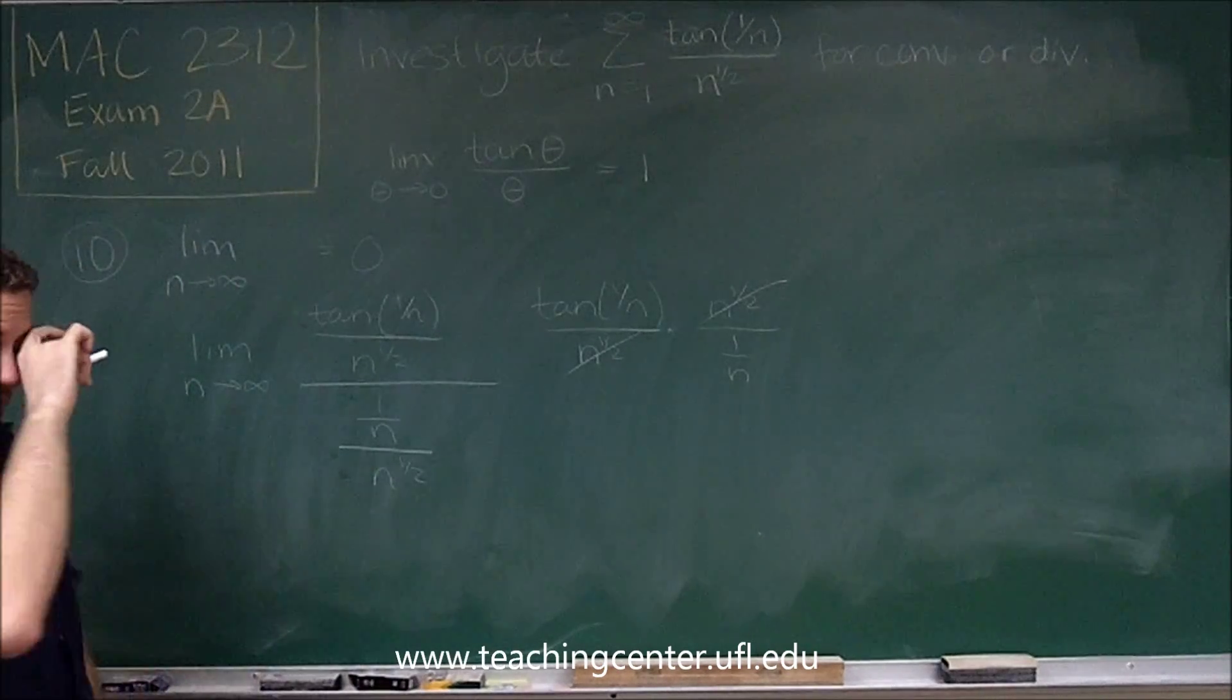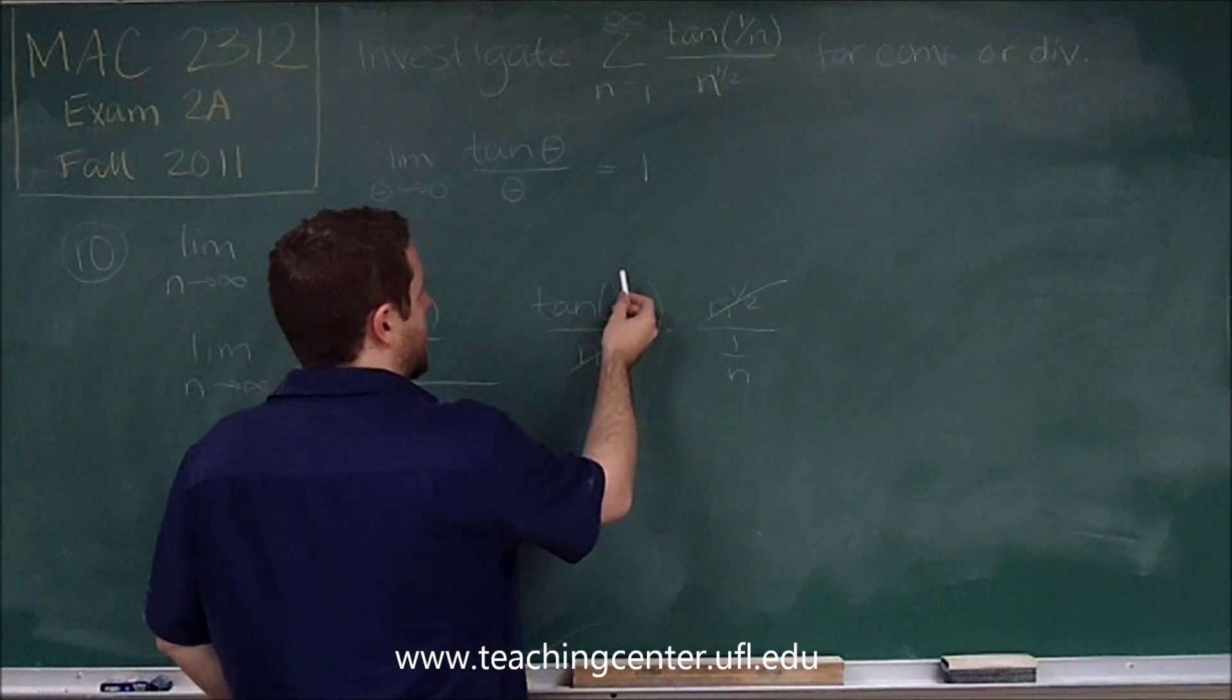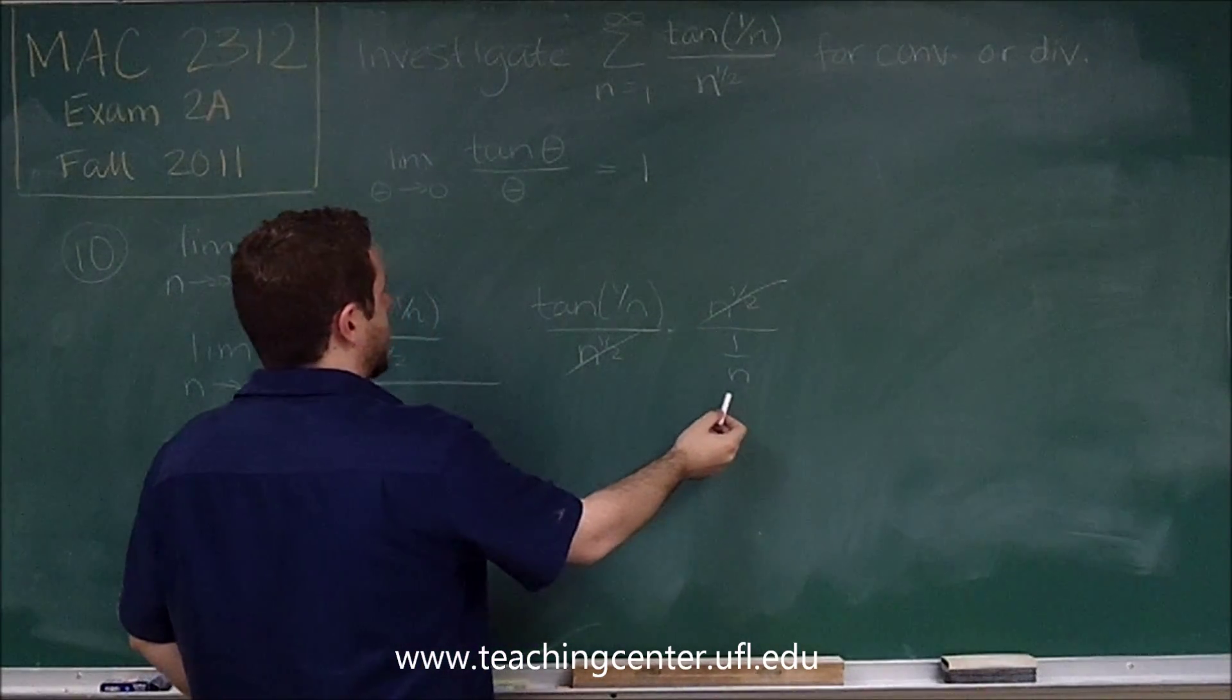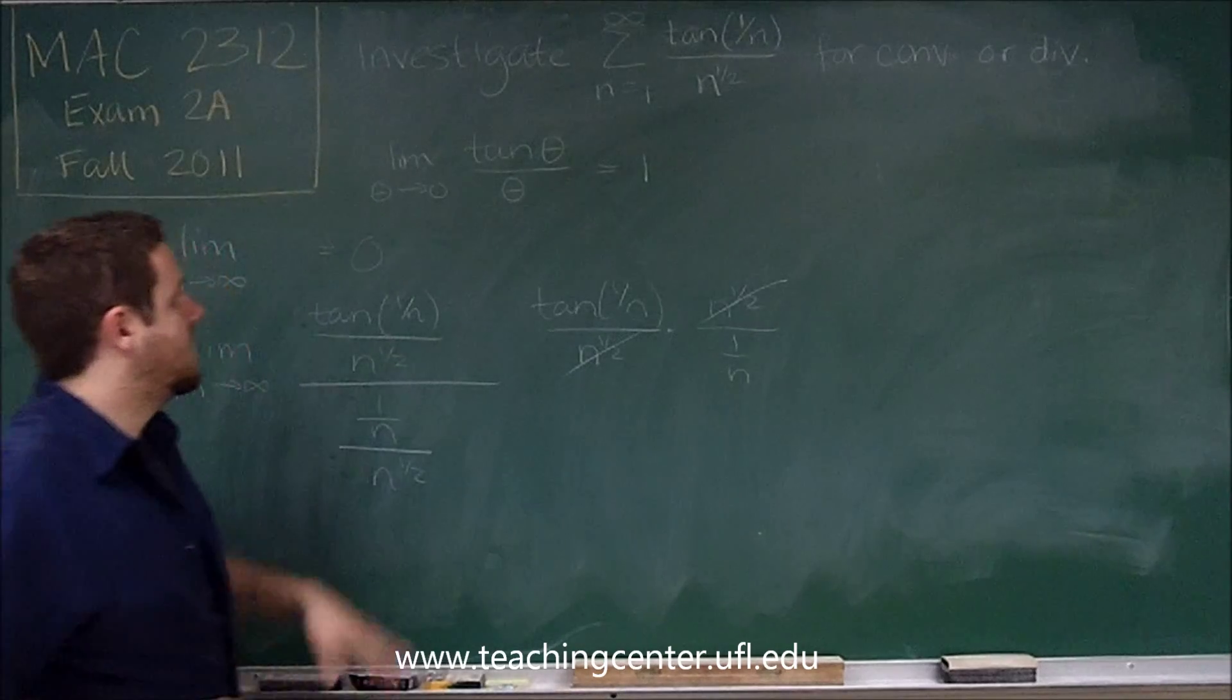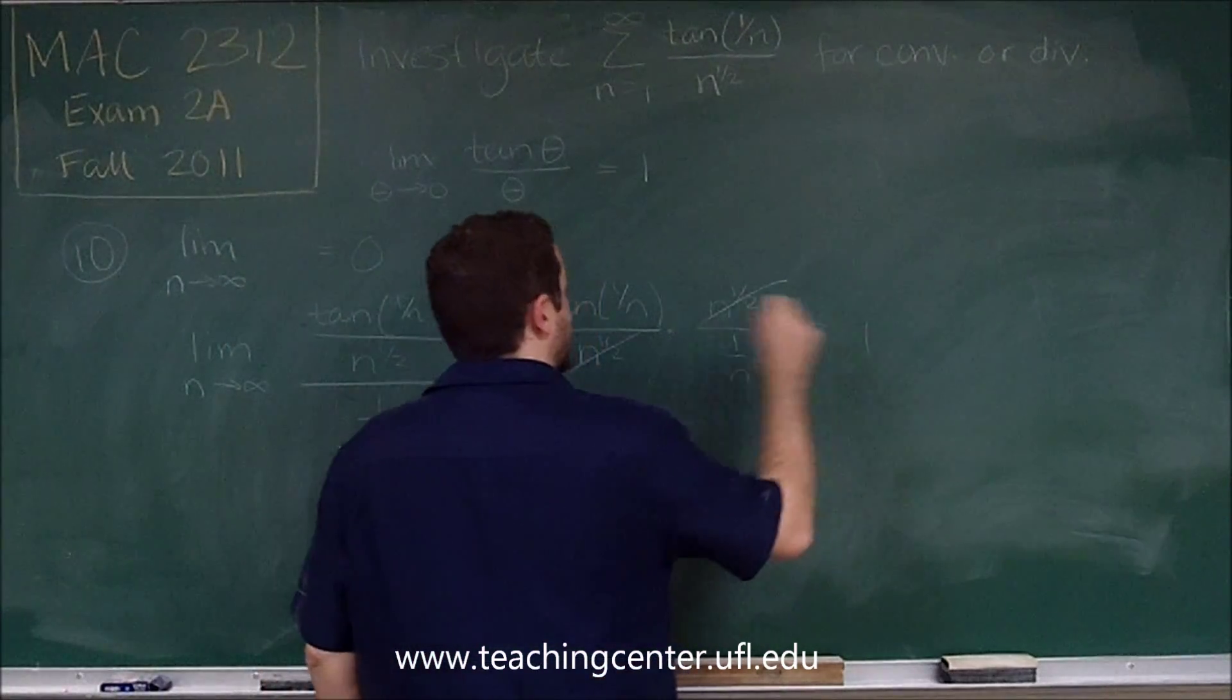So your n to the 1 halfs cancel like you would expect here. We're dividing n to the 1 half on both the top and the bottom. And lastly here we have tan of 1 over n over 1 over n. As n goes to infinity, this is exactly this limit. So those end up giving you 1.